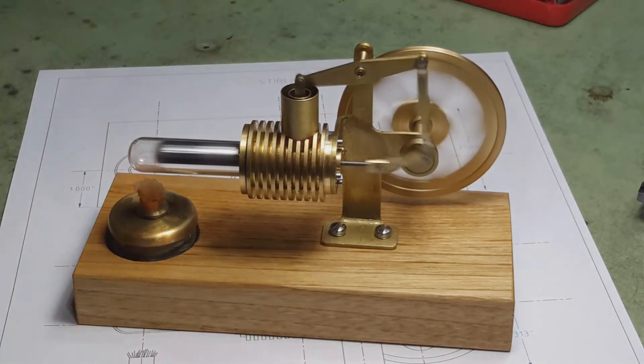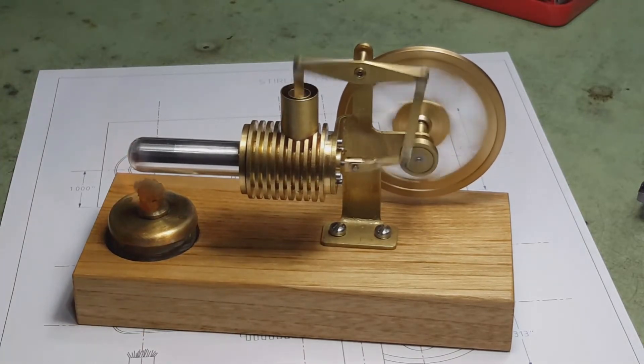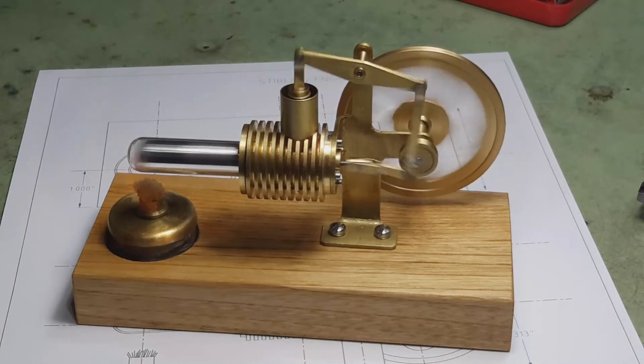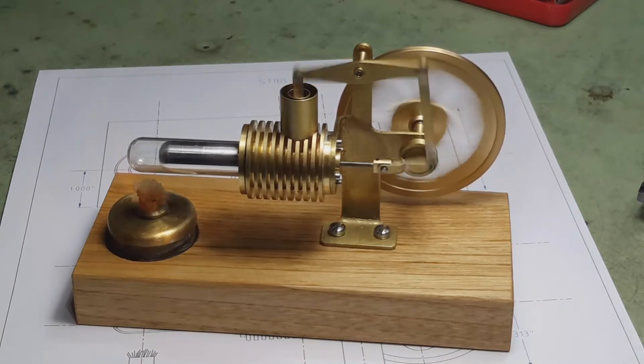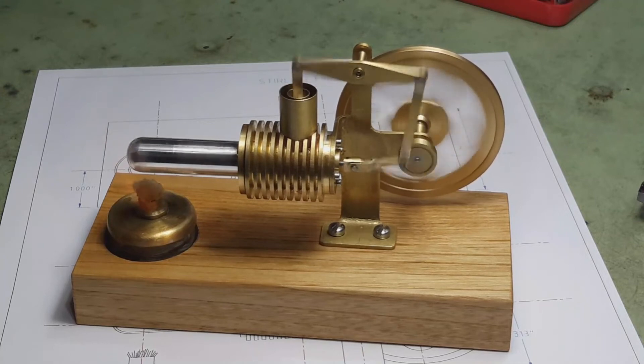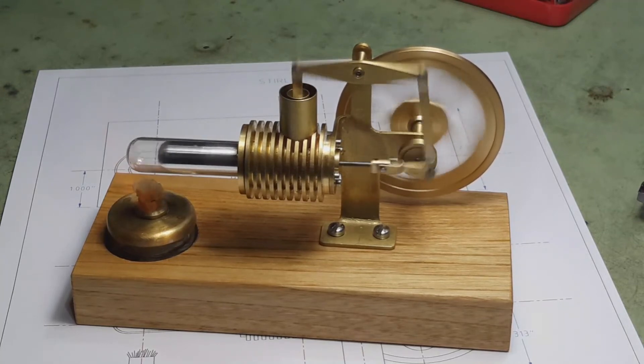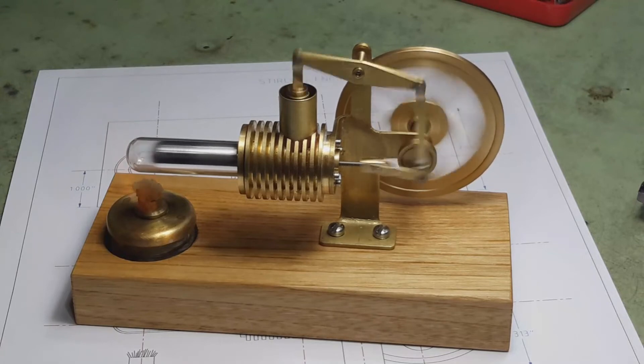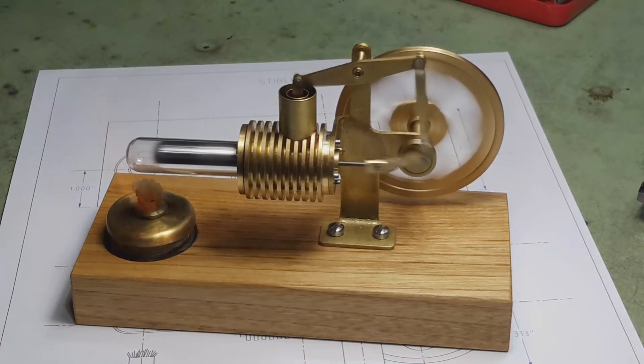So the general proportions that seem to work pretty good would be for the power piston to be about one half the diameter of the displacer cylinder. That's assuming they both have the same length stroke.